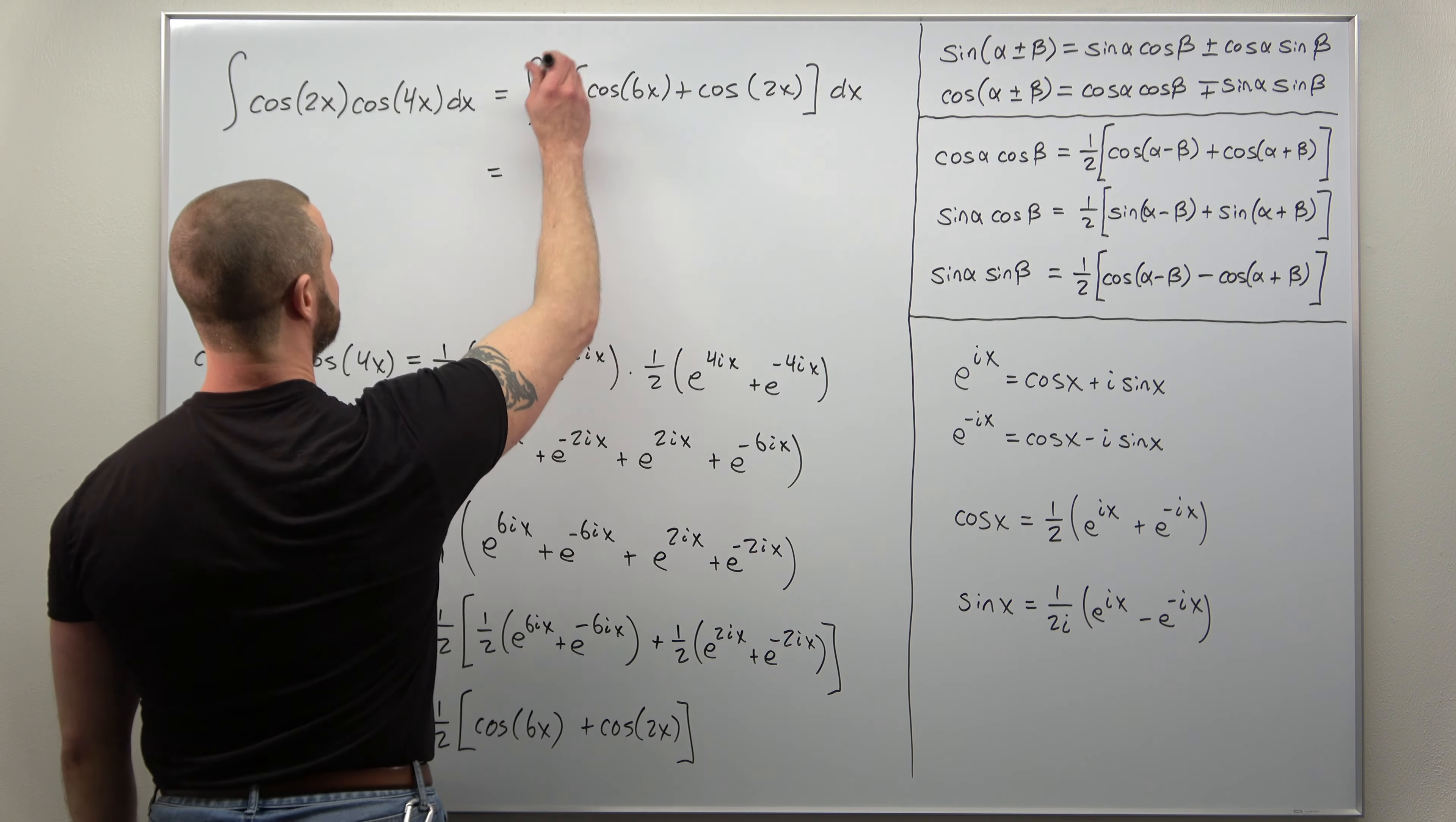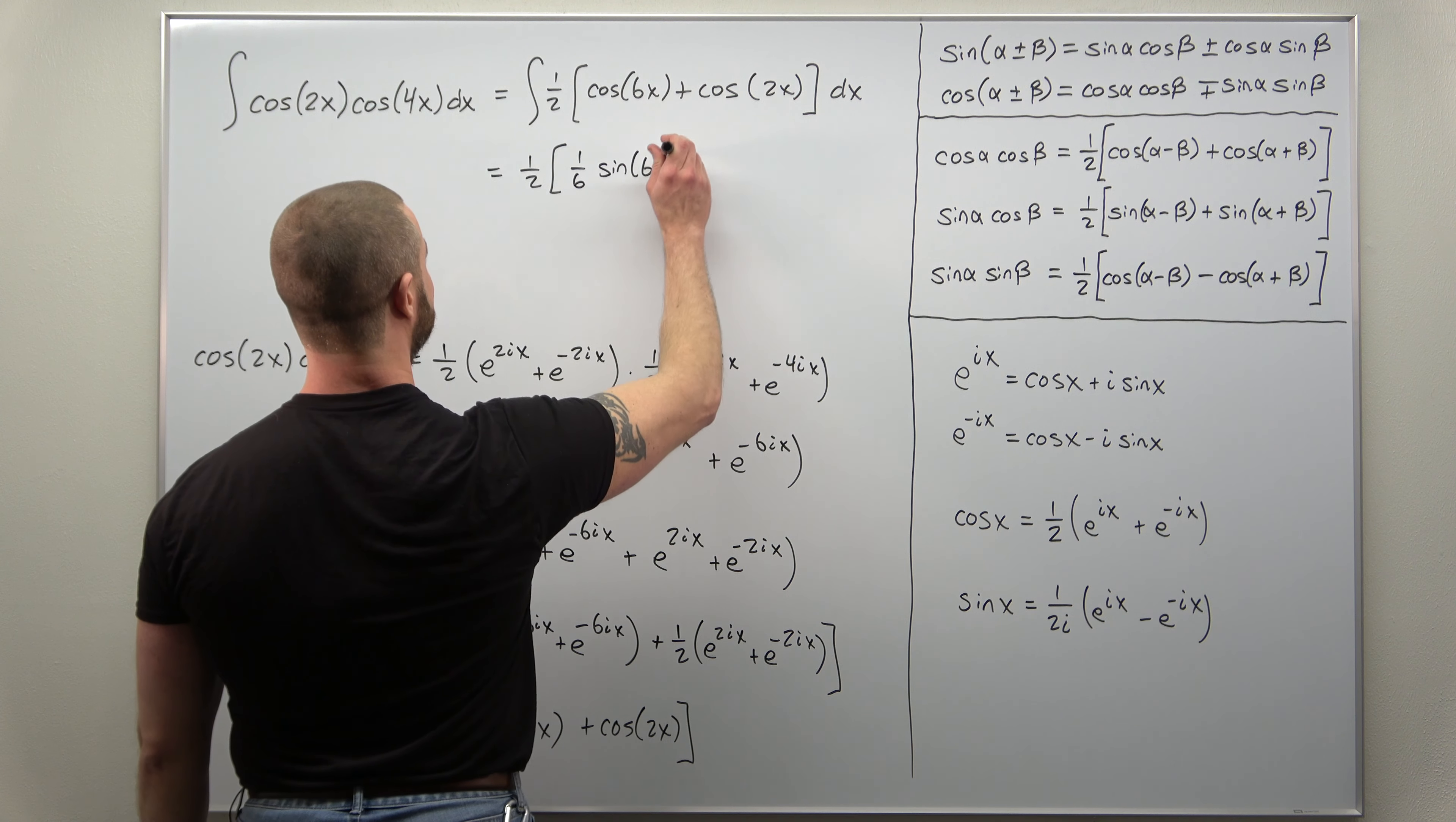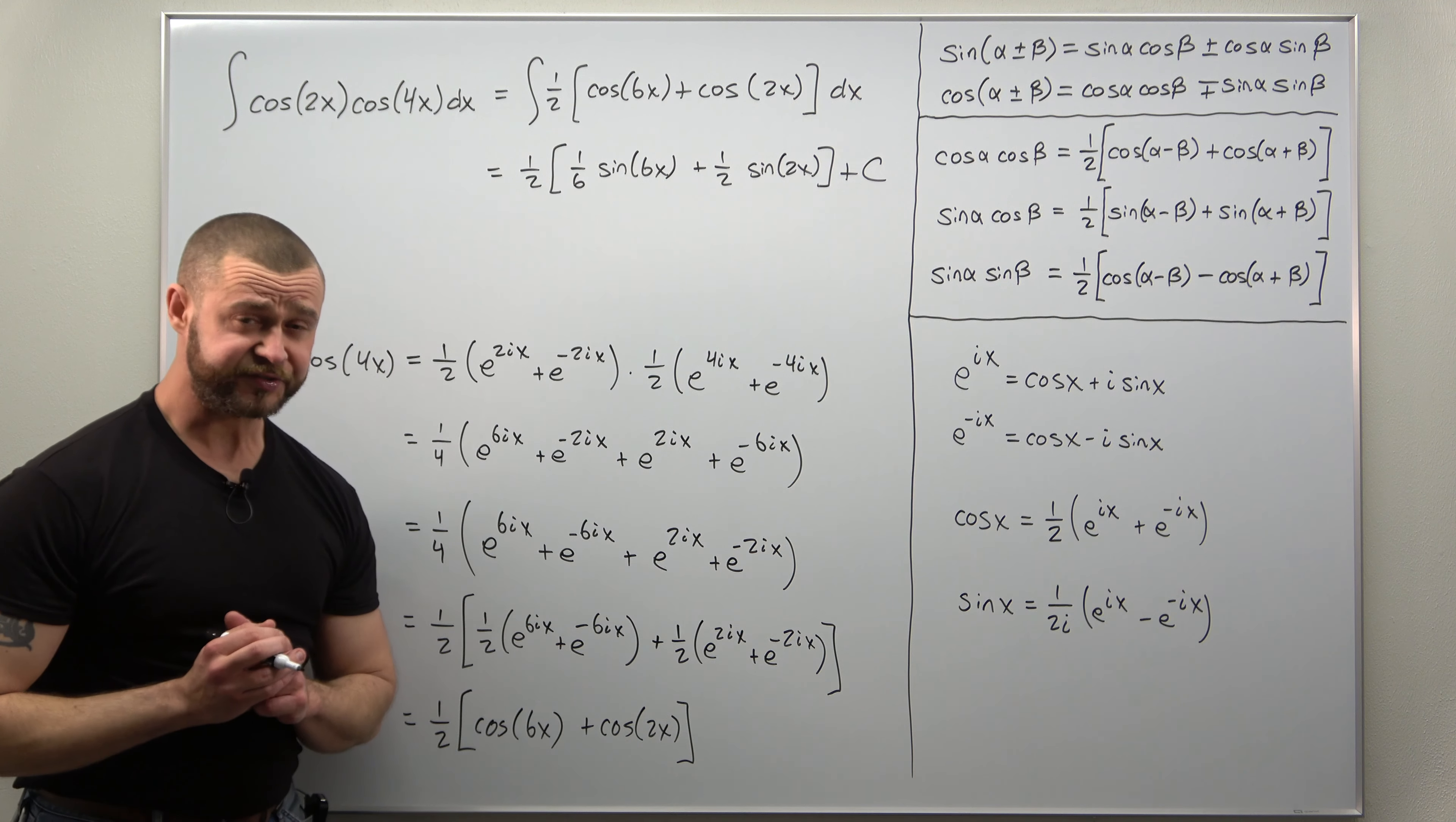It looks like we get our anti-derivative pretty easily. We have the factor of one-half out front, and we get one over six times sine of 6x, and then plus one over two sine of 2x. Don't forget the plus C.